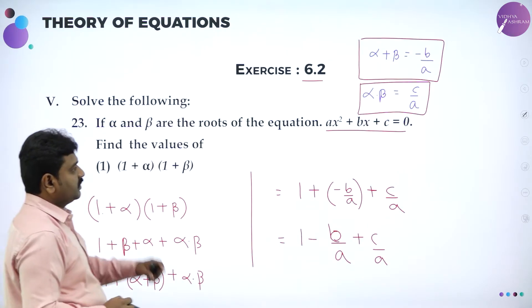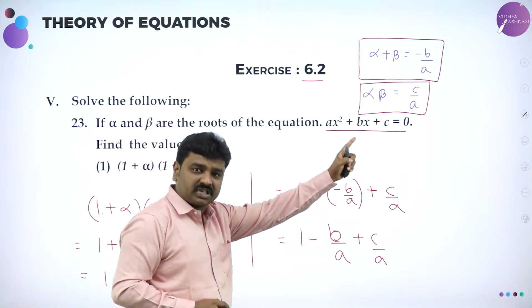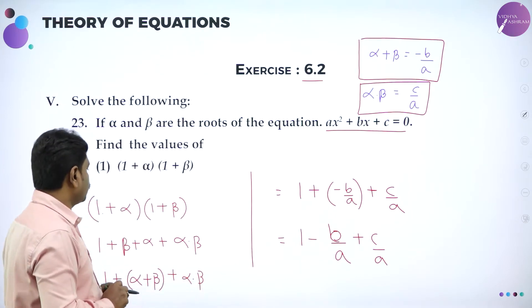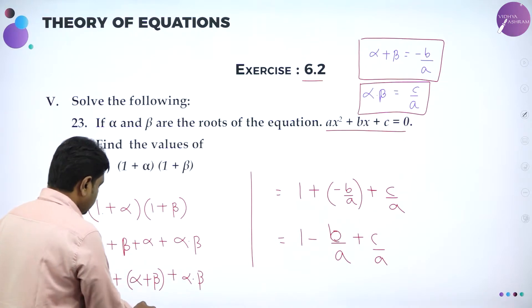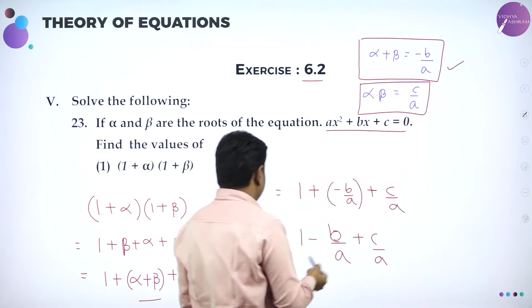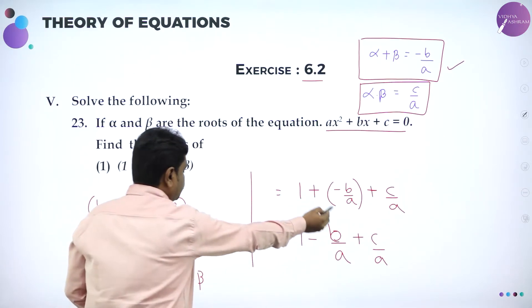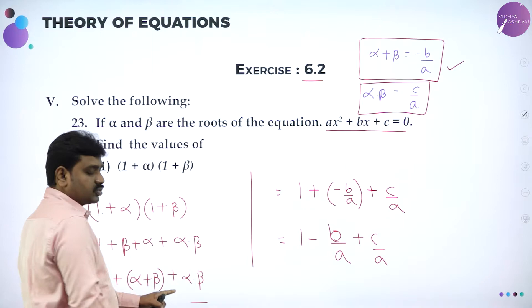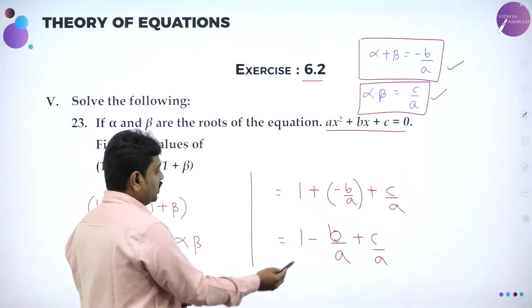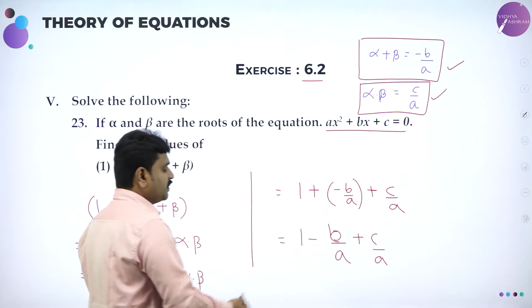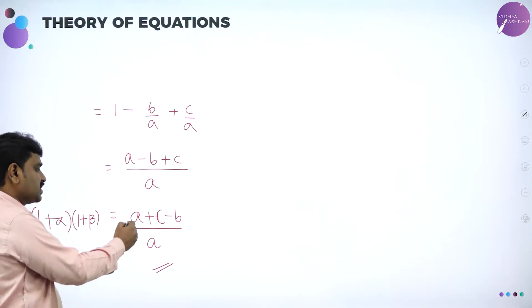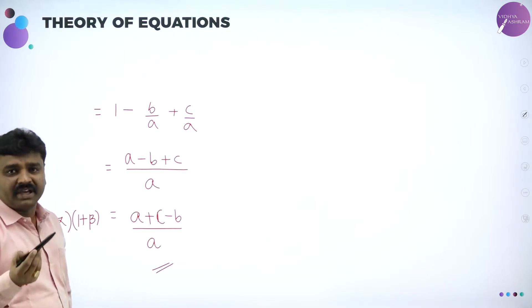Dear students, here they gave a quadratic equation AX squared plus BX plus C equal to 0. For that, first you find sum of roots and product of roots. Sum of roots alpha plus beta is minus B by A. In the place of alpha plus beta, I am putting minus B by A. Plus we have product of roots alpha into beta, which is C by A. Then simplify to get the required value: A plus C minus B divided by A.